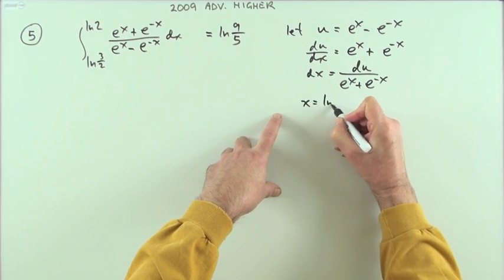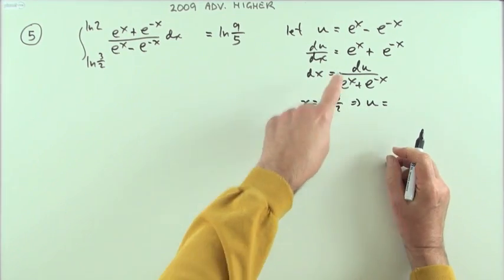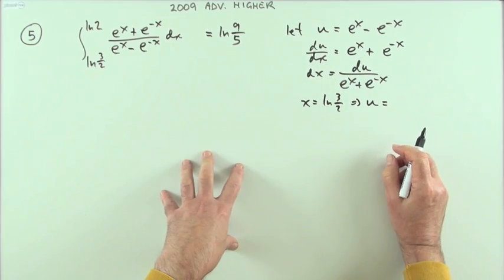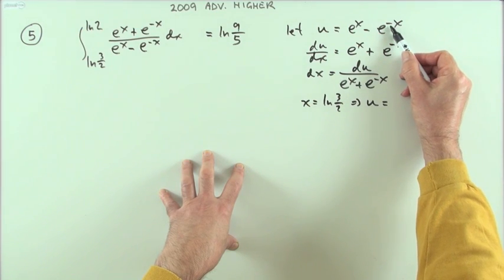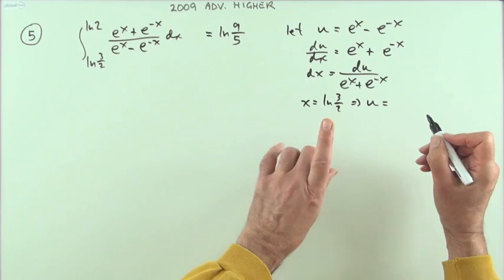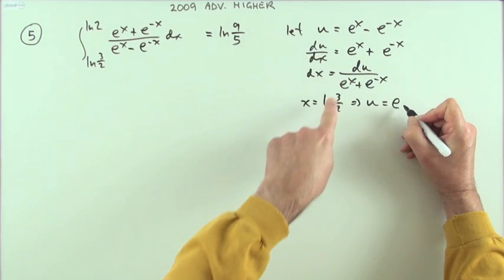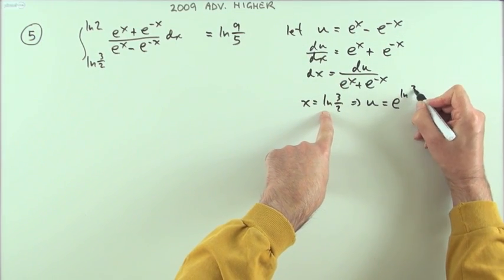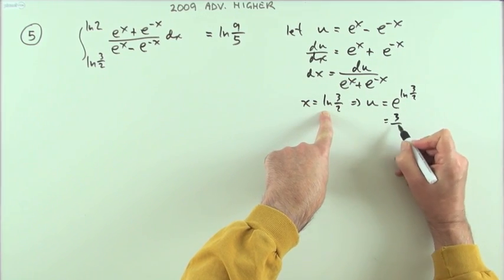When x is ln(3/2), what have I got? Well u will be, now I know e^ln is going to just make that disappear and just leave you with 3/2, but I'll have to be more careful when I've got this negative in front of the ln, so I think I'll just spell it out to be careful here. So u is going to be e^x which is ln(3/2), quite happy with that. e^ln, that just goes, leaving me 3/2.